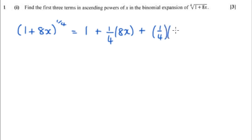times n minus 1, so that's a quarter minus one which is negative 3 quarters, and then the x term, 8x squared this time, and we're going to divide this by 2 factorial or just 2.